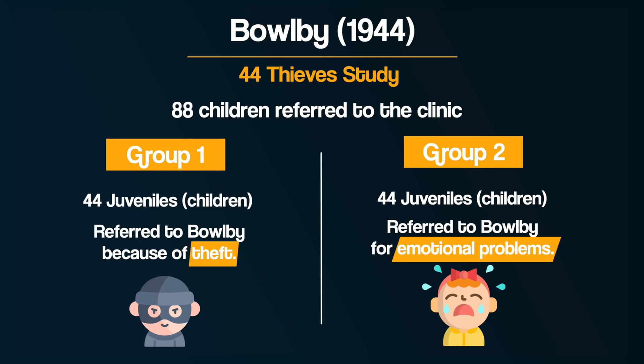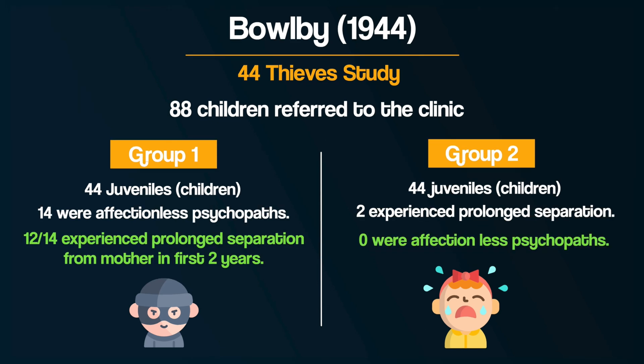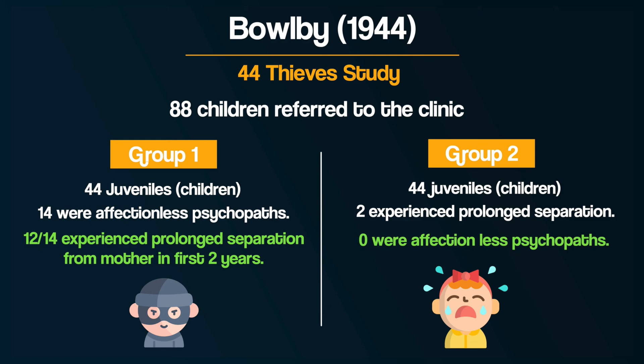Evidence for Bowlby's maternal deprivation theory comes from his famous 44 Thieves study. He examined 44 juvenile delinquents who had a history of stealing and compared them to a control group of 44 non-delinquent children. Bowlby found that 14 of these children were diagnosed as affectionless psychopaths, characterised by a lack of guilt, empathy, or concern for others. Importantly, 12 of these 14 children had experienced prolonged separation during the critical period, demonstrating the connection between maternal deprivation and criminal behaviour.